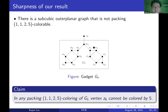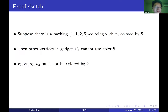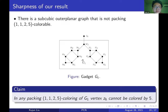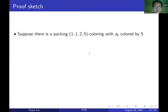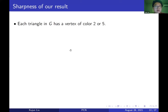Since color 5 is blocked, vertices V2, V3, U2, U3 must not be colored 2, because otherwise the triangle V4, V5, V6 cannot be colored — color 5 is unavailable there and color 2 would be too close. This forces V1 and U1 to both be colored 2, but they have distance 2, which is a contradiction. This proves the claim.